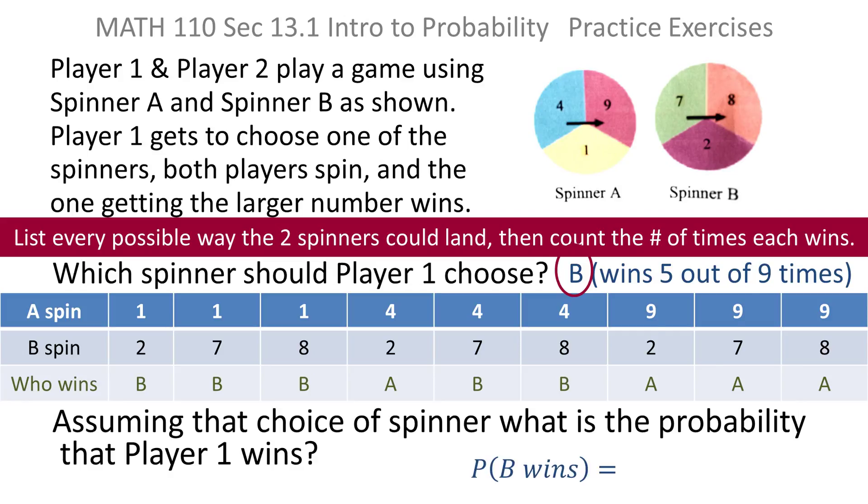So the probability of winning if the player chooses spinner B is simply 5/9, 5 out of 9 times. So if Player 1 is smart, he or she will choose spinner B and expect to win 5/9 of the time.